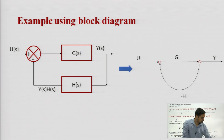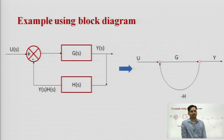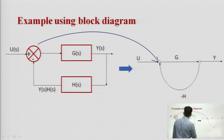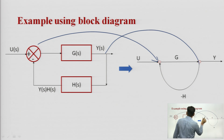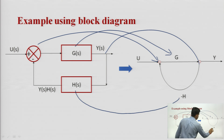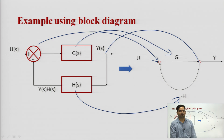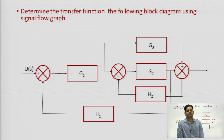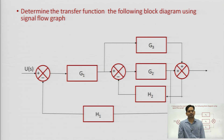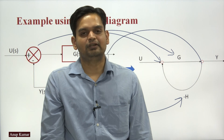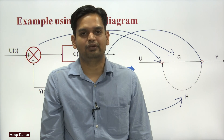For the second example, using a block diagram with a feedback path, we can replace the summer point with a single node and the takeoff point with a single node, where the forward gain is G and the feedback gain is H. In this way we can convert a block diagram into a signal flow graph. In the next lecture we will solve this example using signal flow graph to calculate its transfer function.